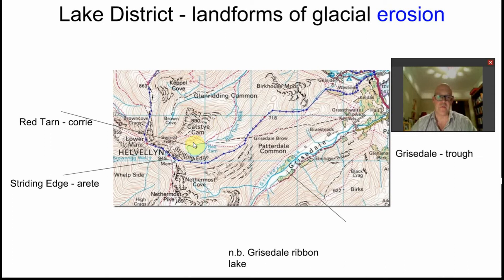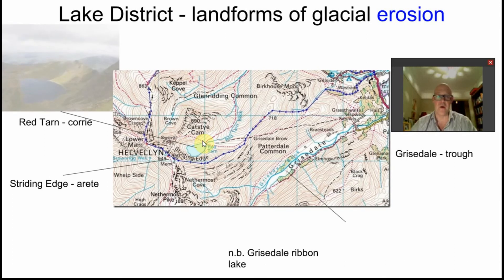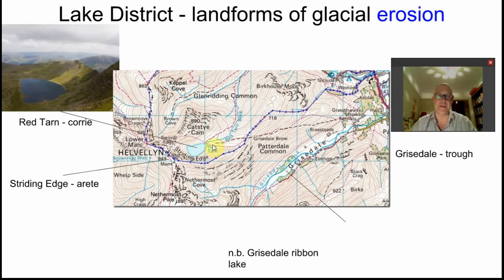Erosion. First of all, we have the obvious feature of the Tarn — the enclosed, almost circular feature that's been left behind by the rotational excavation. Bear in mind, they're called different things: a Cirque in France, a Coombe in Wales, and here a Corrie, which is English or Scottish.